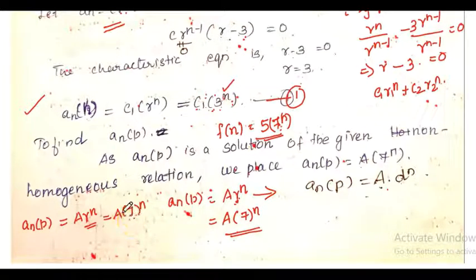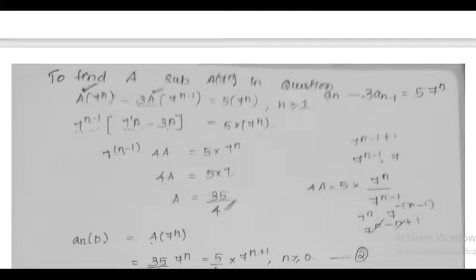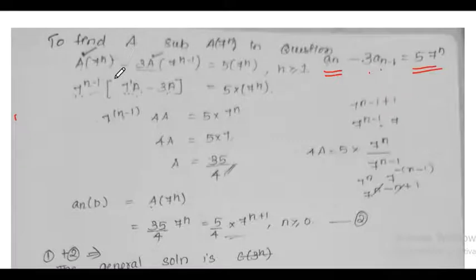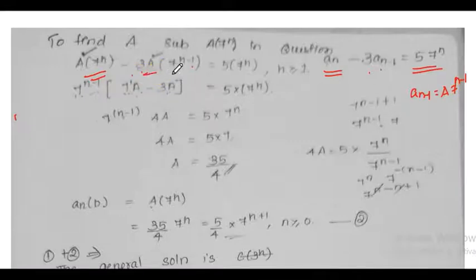Since 7^n is not a solution of the homogeneous relation, we assume a(n)_p = A·7^n. Substituting into the recurrence relation a(n) - 3·a(n-1) = 5·7^n: we get A·7^n - 3·A·7^(n-1) = 5·7^n.